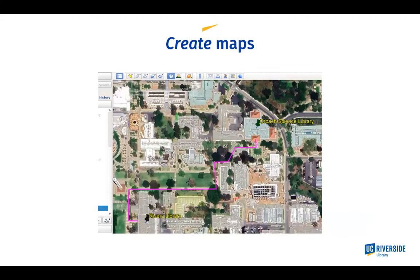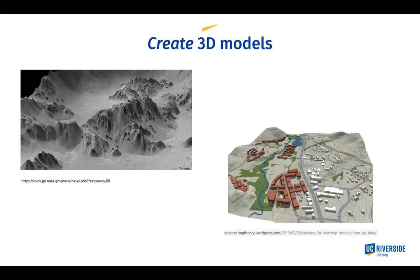You can create maps — here's a simple one I made using Google Earth Pro of the UCR campus, showing the two library buildings and a path between them. GIS has also developed a lot in the last 15 to 20 years in the ability to work with 3D views, such as a 3D rendering of a portion of the Mars landscape that NASA is interested in, or a mock-up showing what planned buildings would look like in a particular area.